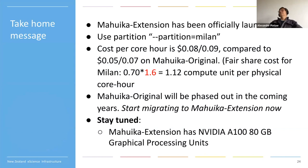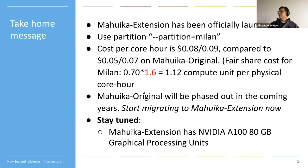Mahuika Extension has officially been launched and we have a new partition called Milan. You can use the notation -p Milan. The cost per core-hour is a little higher than Mahuika original — about 1.6 times more. Keep in mind that Mahuika original is slowly reaching its end of life and will be replaced at some point. We don't have a date yet, but it's a good idea to start migrating to Mahuika Extension — at least check if your code runs there — and inform us if something worries you or needs attention.